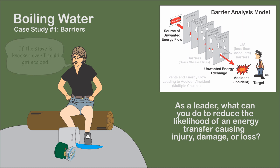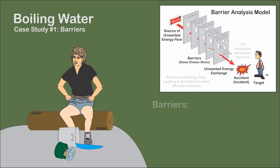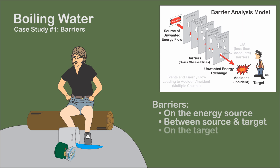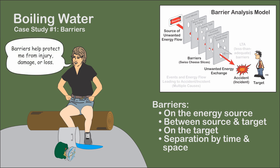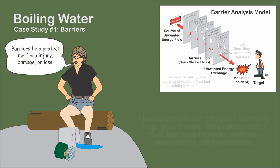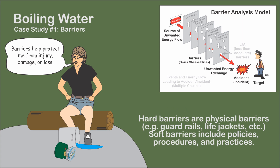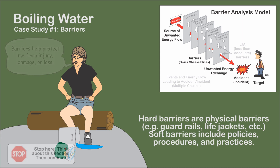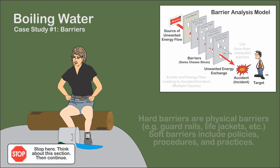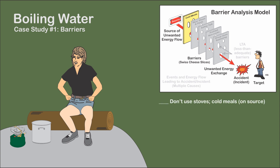The question is, what can you do as the leader to reduce the likelihood of an unwanted energy transfer which can cause injury, damage, or loss? You can place barriers on the energy source, between the source and target, on the target, and separate by time and space. Barriers can be divided into hard or physical barriers and soft barriers, which include policies, procedures, and practices. For example, not using stoves and eating cold meals is a soft barrier that eliminates the stove as a potential unwanted energy source.